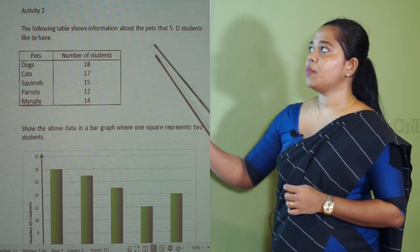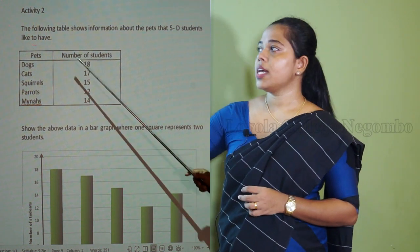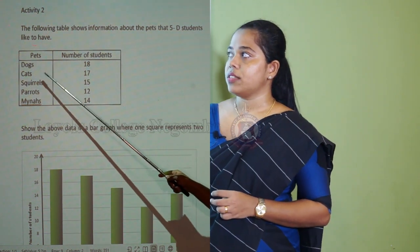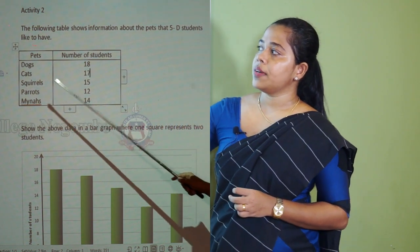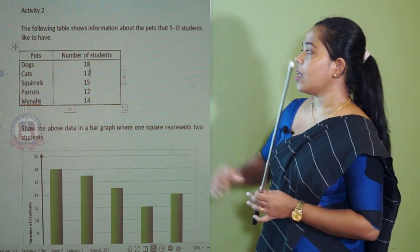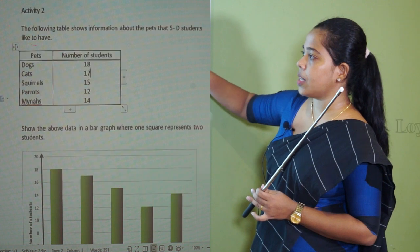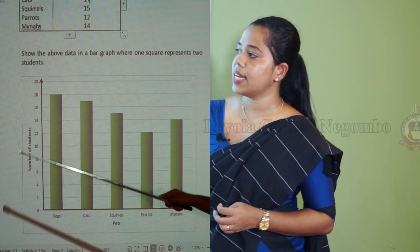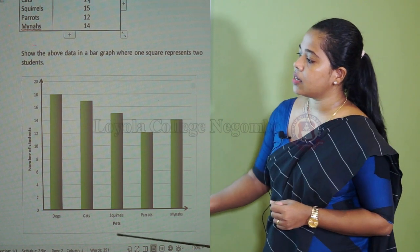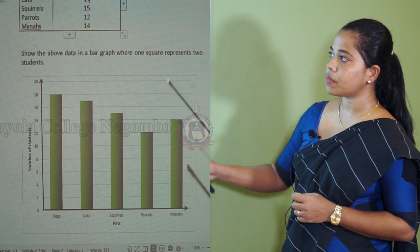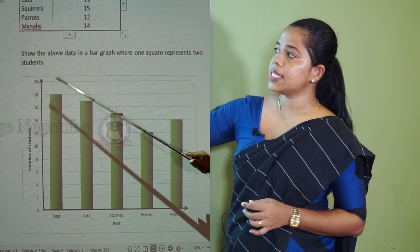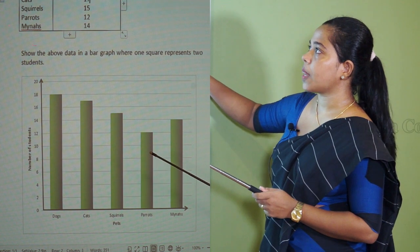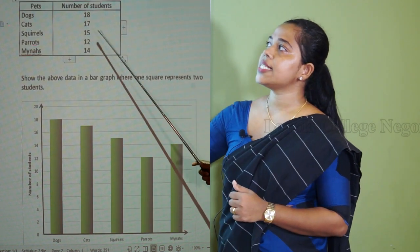The following table shows information about the pets that 5D students like to have. The pets and the number of students who like them are given in the table: 18 students like dogs, 17 like cats, 15 like squirrels, 12 like parrots, and 14 like minors. I have shown this data in a bar graph. First, name the two axes — the vertical axis as number of students and the horizontal axis as pets — and name all the pets given.